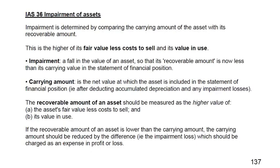In the revaluation model we do not impair an asset; we just revalue it to reflect current market value. Impairment, however, is applied in the case of the cost model. When using the cost model, we keep the asset on historical cost and do not increase its value even if market value rises. We need to check for impairment every year at minimum, and also mid-year if circumstances suggest a permanent reduction in value is occurring.